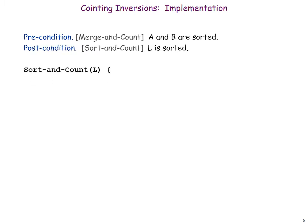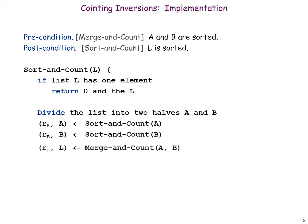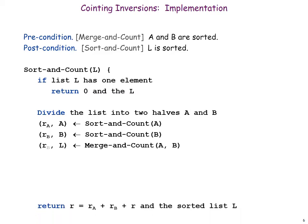The question is how do we count inversions in the merge operation? Let i be used for indexing the left subarray and j for indexing the right subarray. At any step in the merge, if the value at index i is greater than the value at index j, then we know that there are mid minus i inversions.